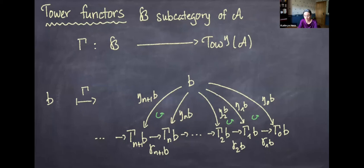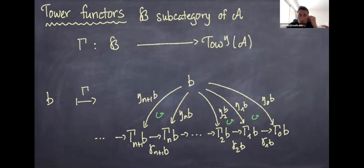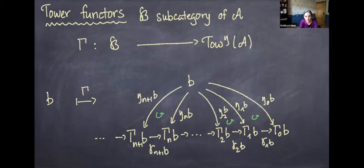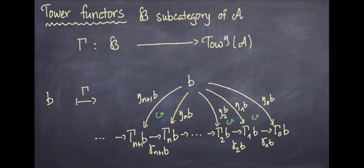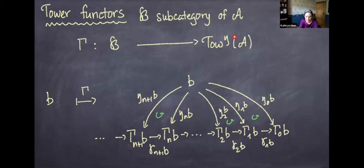We'll call such a functor from a subcategory of A into the category of co-augmented towers in A a tower functor. A calculus is going to be a special kind of tower functor associating to an object a sequence of approximations. [Question about the exponent Ada notation] — Ada denotes the co-augmented structure: these are not just towers, they're all co-augmented, hence Ada.